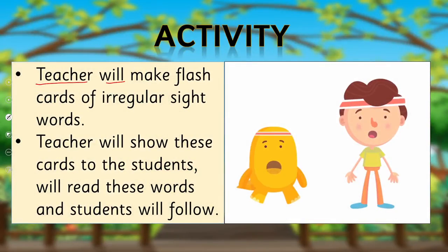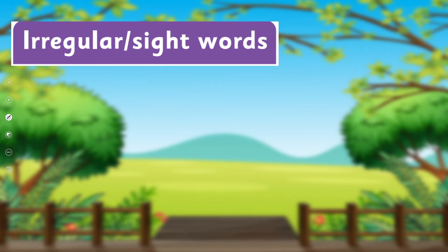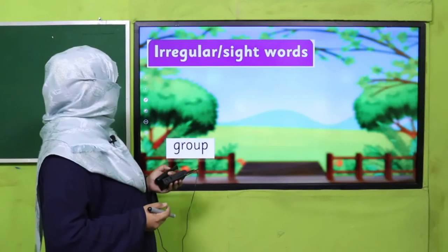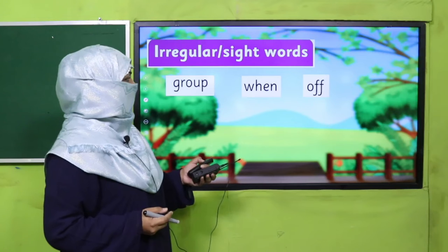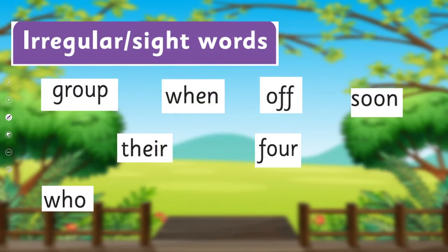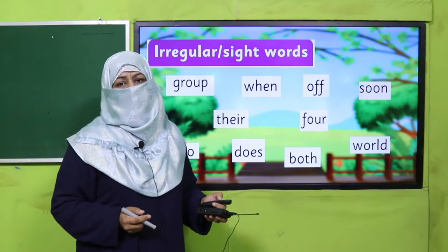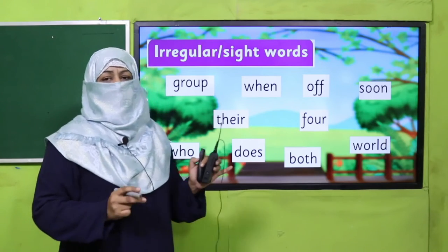Let's practice through an activity. Your teacher will make flashcards of irregular sight words and show these cards to the students. Students will read these words and the teacher will follow along. This is how you will learn to pronounce these words. Here is a list you can follow — or teacher, you can make your own list. Examples: group, when, off, soon, there, for, who, does, both, and, word.